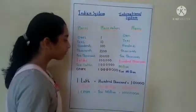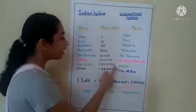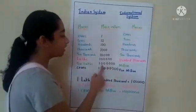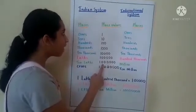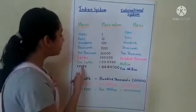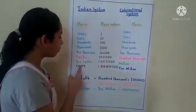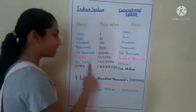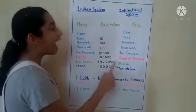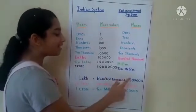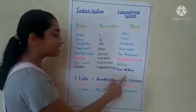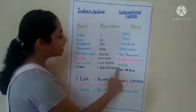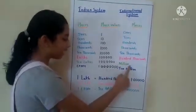Here are 6 zeros. In the Indian System of Numeration, we call it Ten Lakhs, and in the International System, we call it Millions.